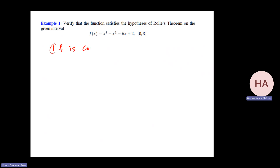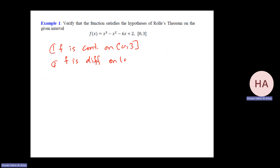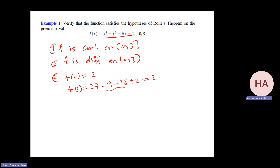For the next function, it is continuous on the closed interval and differentiable everywhere since it's a polynomial. f(0) equals 2, and f(3) equals 27 minus 9 minus 18 plus 2, which equals 2. They are equal, so Rolle's Theorem conditions are satisfied.